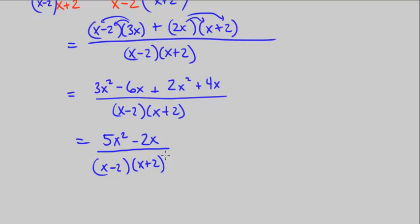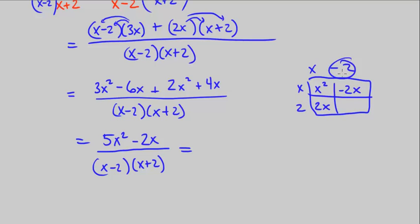Now what we can do is we can go ahead and distribute the denominator. Let's do that over here, x minus 2, x plus 2. Let's use the box method. x times x is x squared. x times negative 2. 2 times x is 2x. 2 times negative 2 is negative 4. I'm going to put a bubble around that because that's really side work.